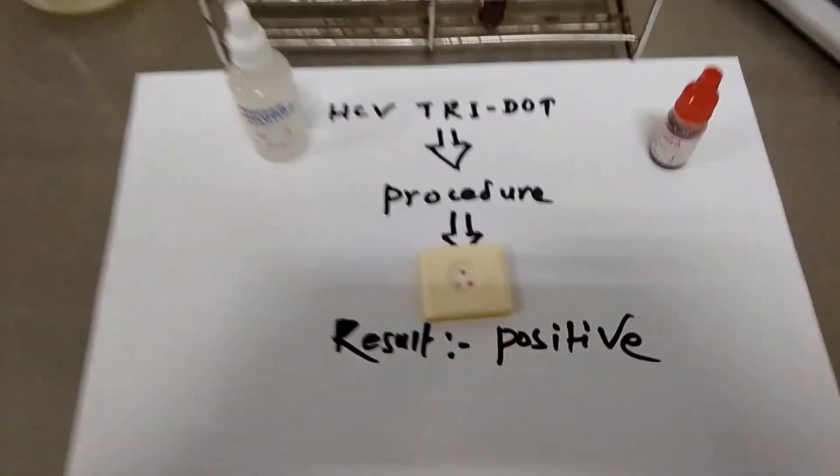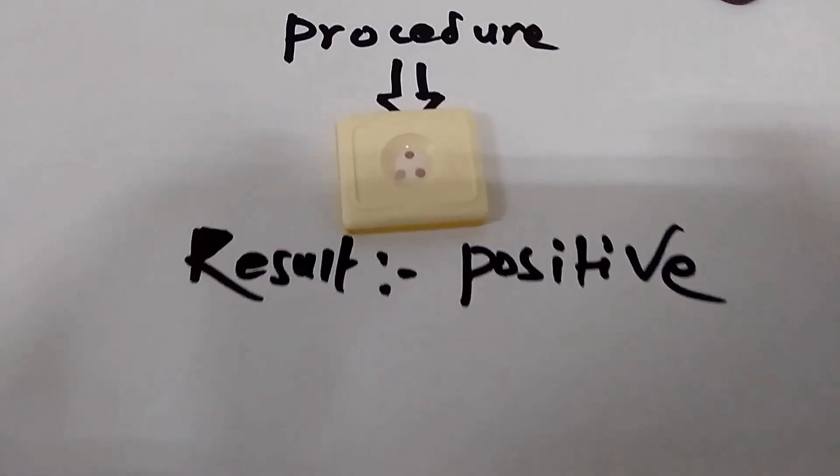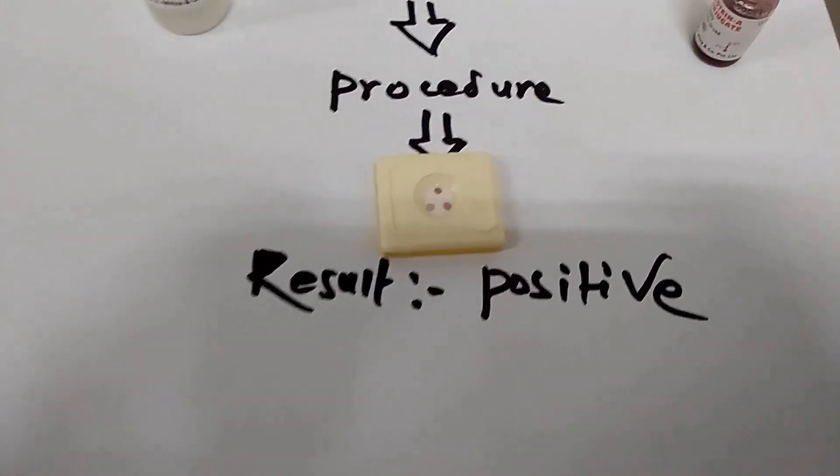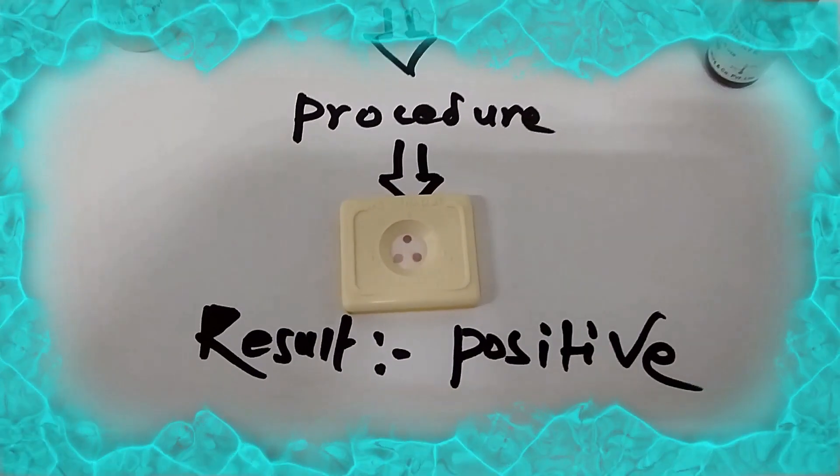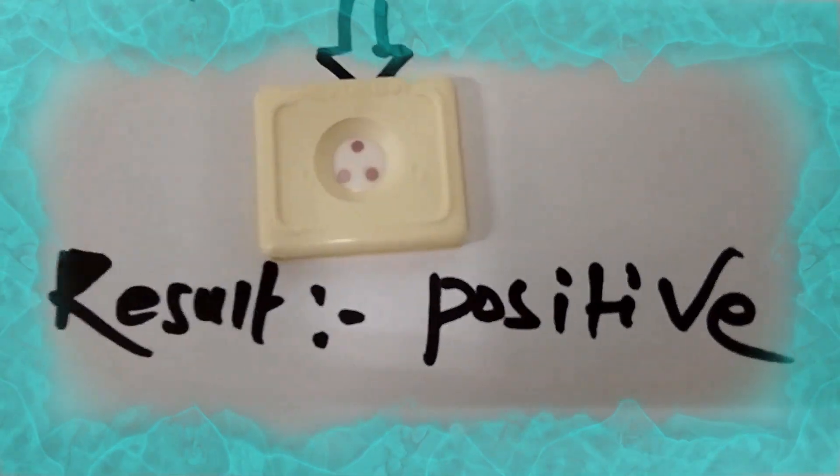Any pink dot plus control dot, test is positive. So here we can see three dots on device. It means that the result is positive.